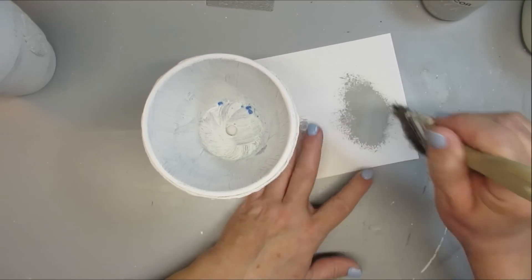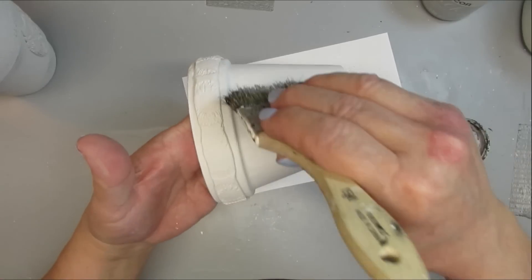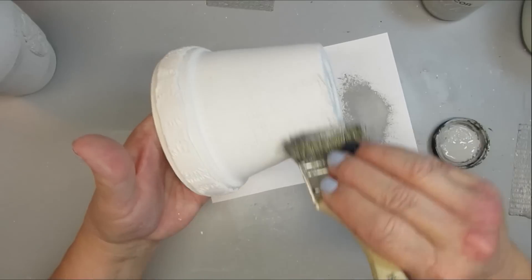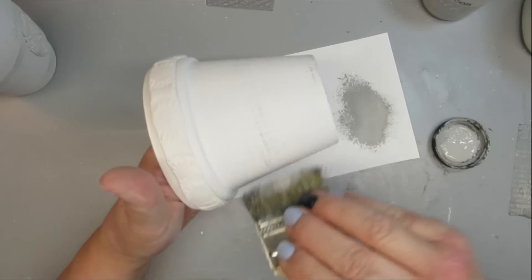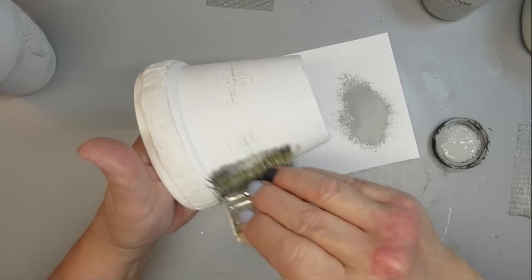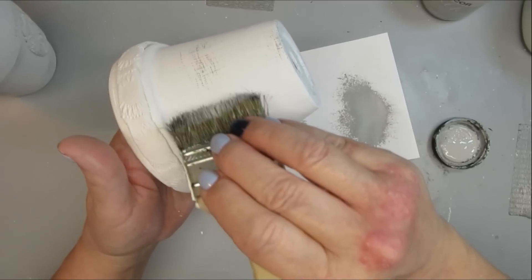Now that everything is dry, I'm taking some of this Parisian gray chalk paint - it's just a light gray - and a chip brush that is really rough. I wanted to have a lot of texture on this and I wanted to be able to actually really have to push with my brush to get some of the marks on.